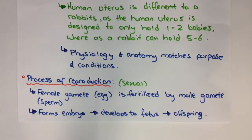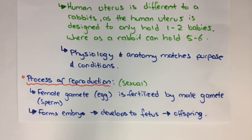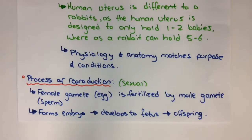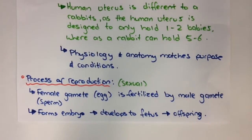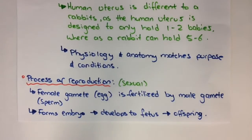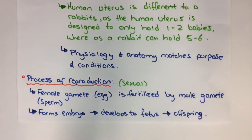Let's talk about the processes of reproduction for an organism that reproduces sexually. When a female gamete, or egg, is fertilized by a male gamete, the sperm, an embryo is formed. That embryo then develops into a fetus, and the fetus creates the offspring. That's a basic overview of how sexual reproduction works.